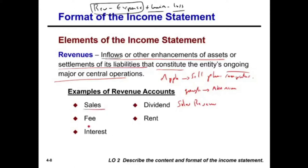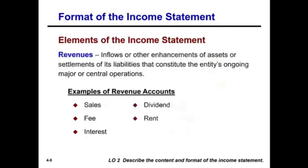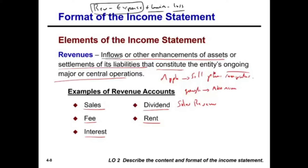Examples of revenues are sales. Some companies charge fees. Some companies, if they lend money, have interest revenue. Some companies invest. Some companies rent. So each company will have a different source of revenue. Depending on what you do for a living, that determines your revenue. For example, you as a student most probably have a part-time job and that's your revenue. What is your central, ongoing, major, or central operation? That's how you generate your revenue.